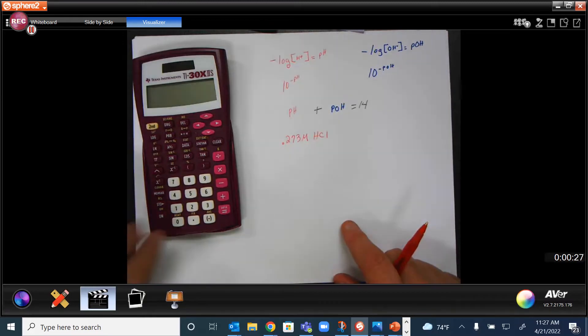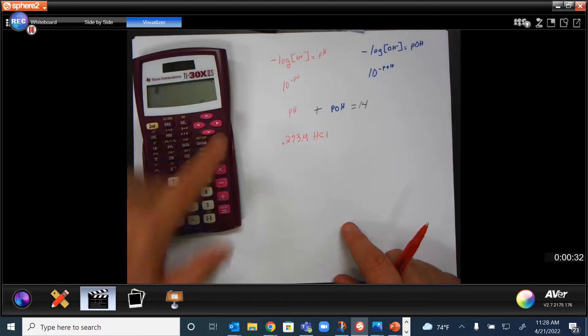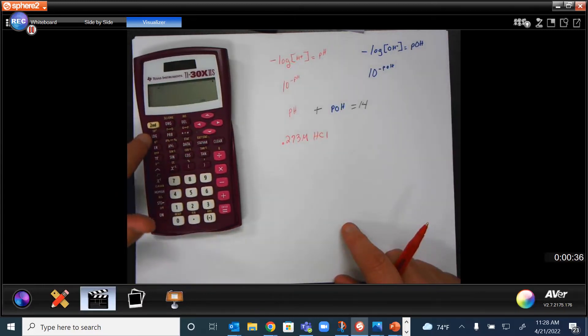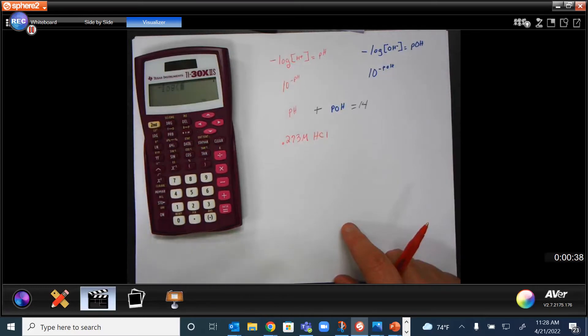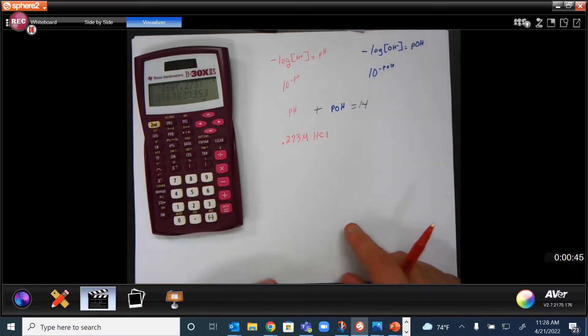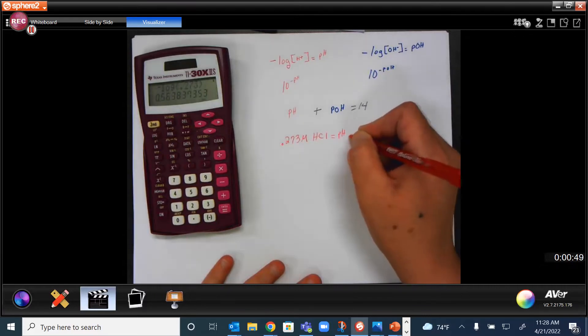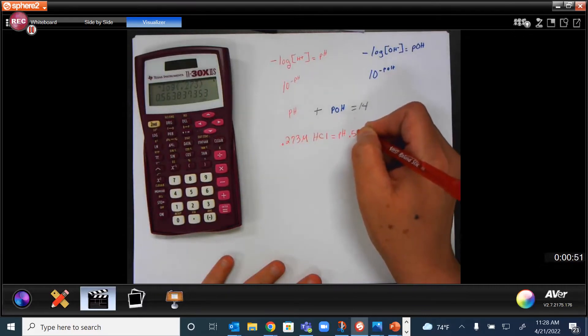push the negative button on your calculator, hit the log button, and then type in your concentration, 0.273, close your parentheses, and your pH will equal 0.564.